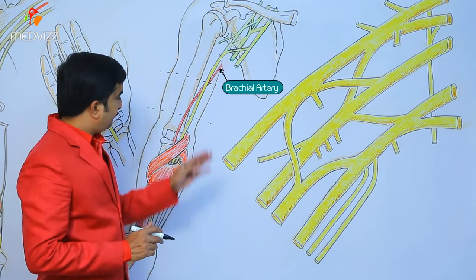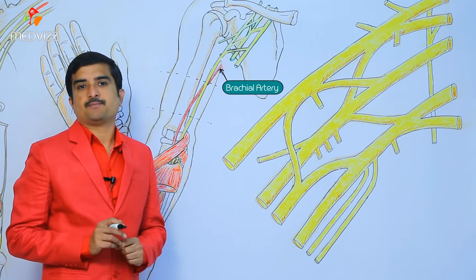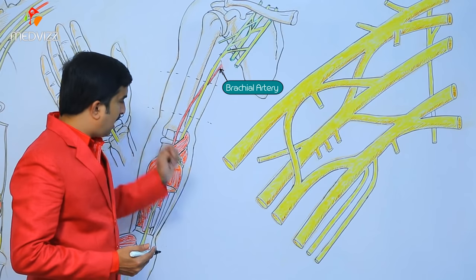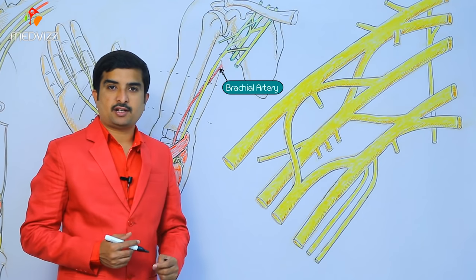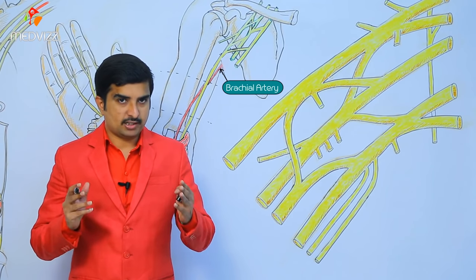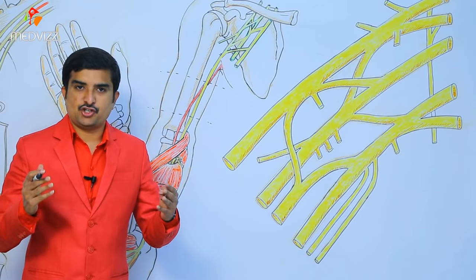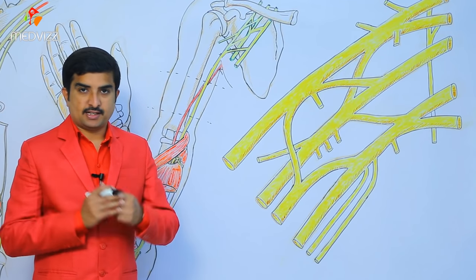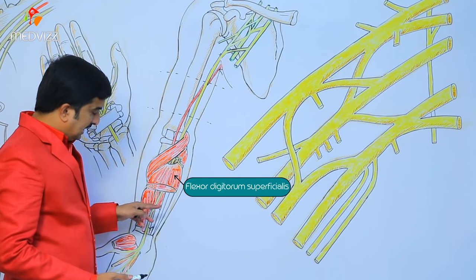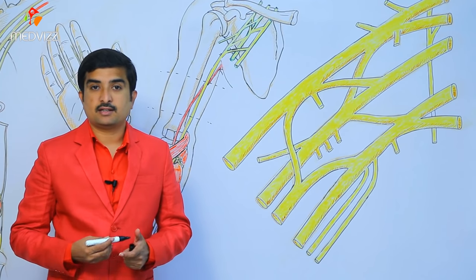In the lower part of the arm, the nerve lies medial to the brachial artery. By the time it reaches the cubital fossa, it is still medial to the brachial artery. It then runs into the forearm, lying between the flexor digitorum superficialis and the flexor digitorum profundus, as clearly seen in this cross-section.